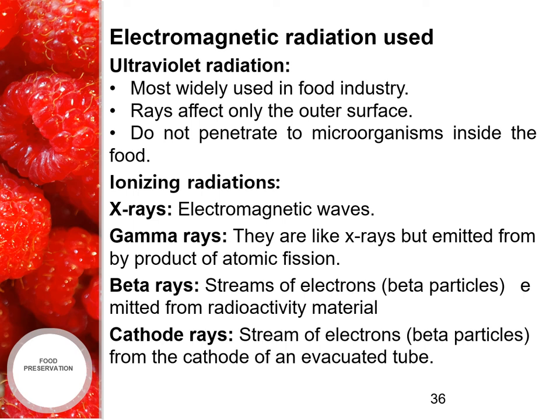There are many electromagnetic radiations used in food irradiation. The first is ultraviolet radiation, which is the most widely used in food industries. The rays affect only the outer surface and do not penetrate microorganisms inside the food. The next are ionizing radiations like X-rays, gamma rays, beta rays and cathode rays. X-rays are electromagnetic waves; gamma rays are like X-rays but emitted from byproducts of atomic fission; and beta rays are streams of electrons emitted from radioactive material.